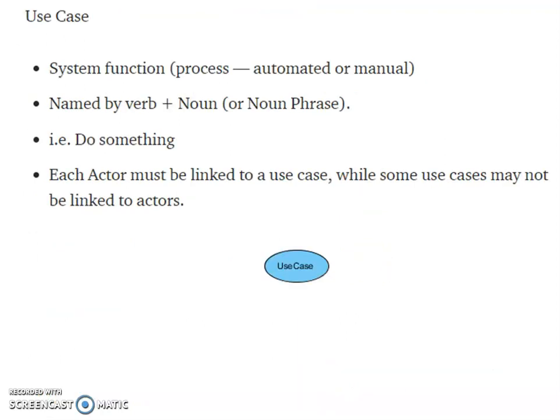And use case is represented by the ellipse symbol. That is, system function. What are the modules? And named by verb plus noun or noun phrase. That is, it is doing something. Each actor must be linked to the use case, while some use cases may not be linked to actors.